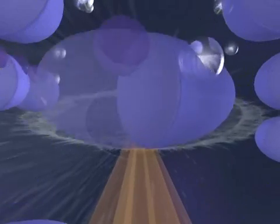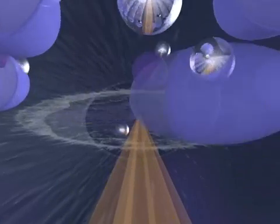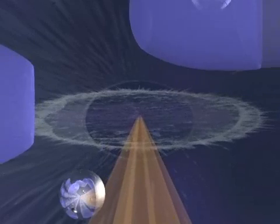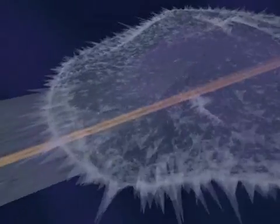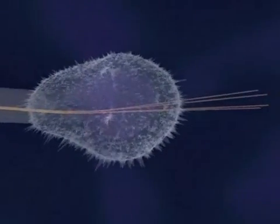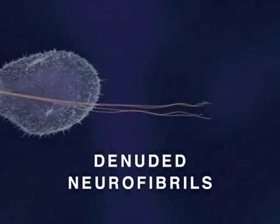Consequently, the neurite's microtubules begin to disassemble into free tubulin molecules, leaving the neurite stripped of its supporting structure. Ultimately, both the developing neurite and its growth cone collapse, and some denuded neurofibrils form aggregates, or tangles, as depicted here.